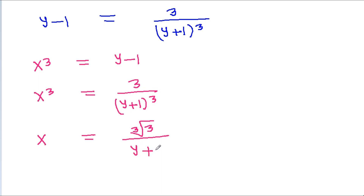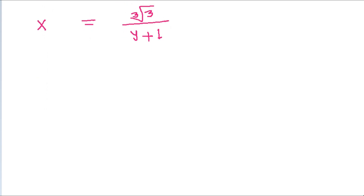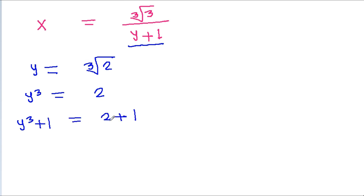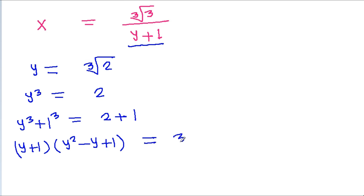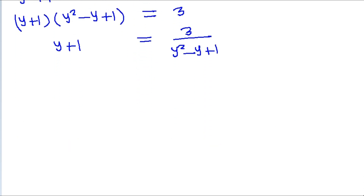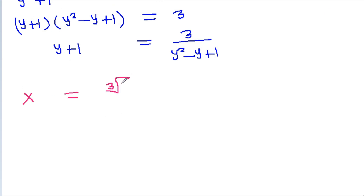Again, we have y equal to the cube root of 2, so y cubed will be equal to 2. And y cubed plus 1 will be equal to 2 plus 1, and since 1 is 1 cubed, y cubed plus 1 cubed equals (y+1) times (y squared minus y plus 1), which equals 3. So y plus 1 equals 3 divided by (y squared minus y plus 1).